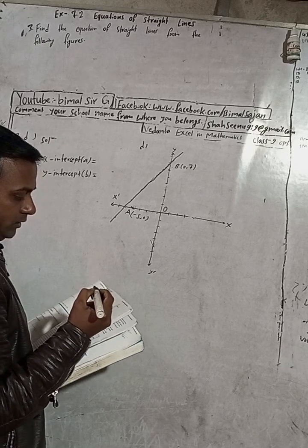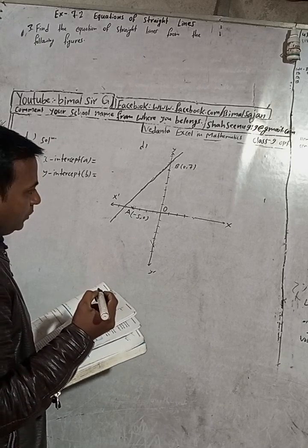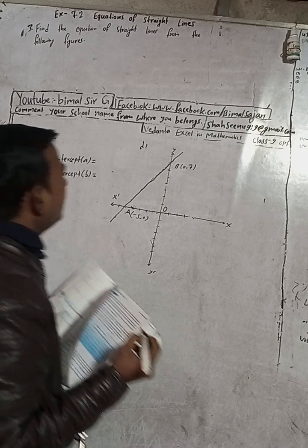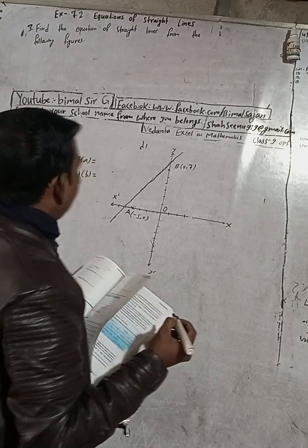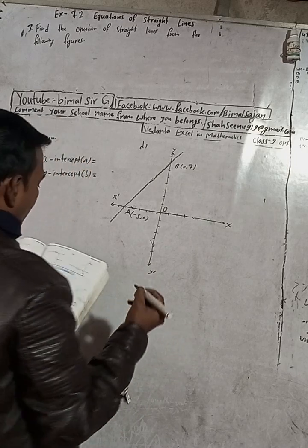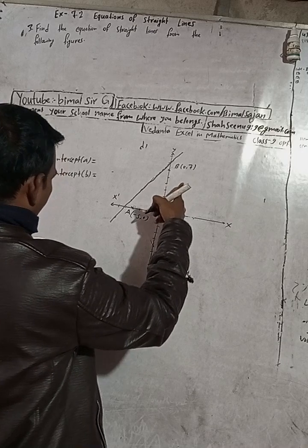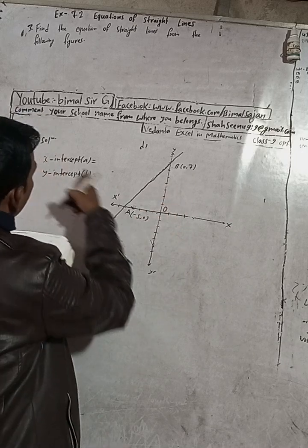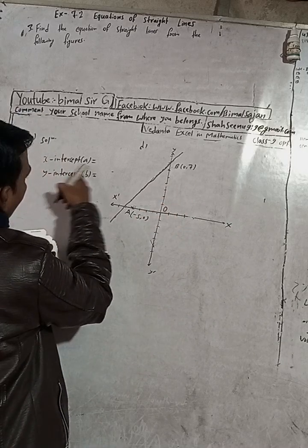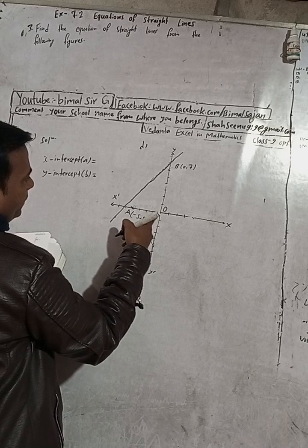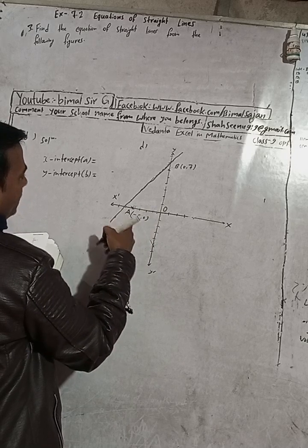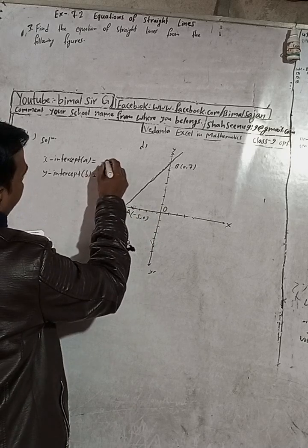The coordinates are: A point is at (-5, 0) and B point is at (0, 7). X-intercept a: counting 1, 2, 3, 4, 5 — this is minus 5 because it is to the left. So x-intercept a = -5. Y-intercept: counting 1, 2, 3, 4, 5, 6, 7 — this is plus 7 going upward.